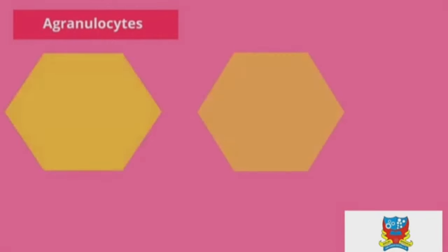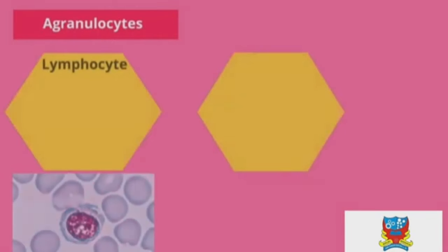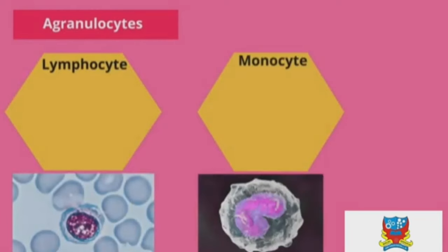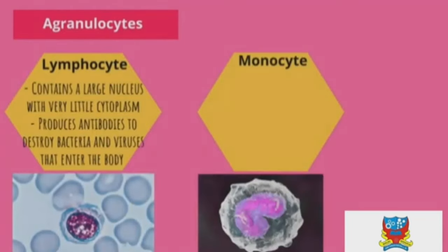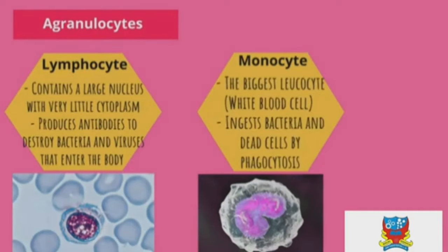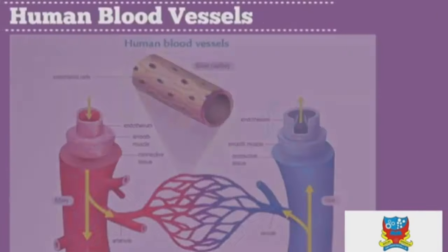Agranulocytes are divided into lymphocytes and monocytes. Lymphocytes contain a large nucleus with very little cytoplasm and produce antibodies to destroy bacteria and viruses that enter the body. Monocytes are the biggest leukocytes and ingest bacteria and dead cells by phagocytosis.